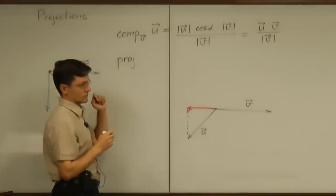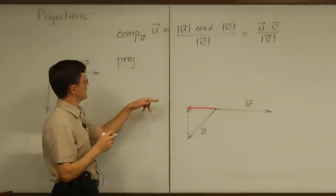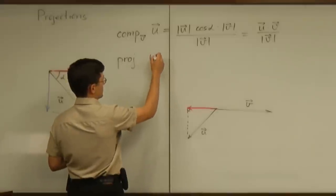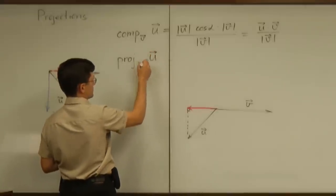So, projection is what that vector is called. Again, projection of u onto v.